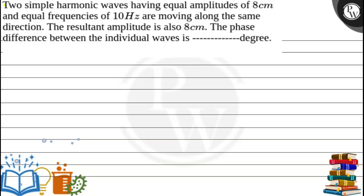Hello. In this question, two simple harmonic waves having equal amplitude of 8 cm and equal frequencies of 10 Hz are moving along the same direction. The resultant amplitude is also 8 cm. We have to find the phase difference between the individual waves.